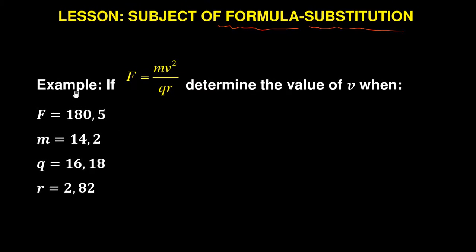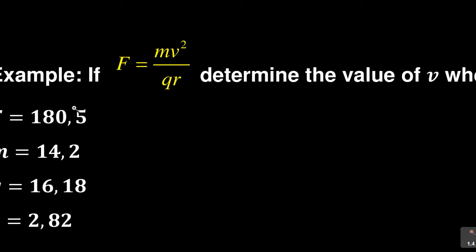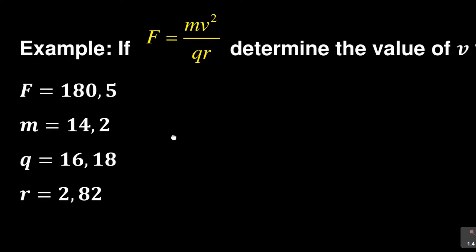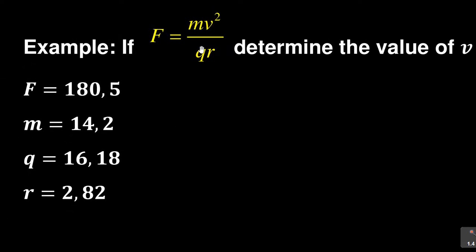Let us look at this question. It says: if F = mv²/qr, determine the value of v. So they want us to find v in this case. I'm going to expand the formula so that I can show you clearly. This is the formula: F = mv²/qr. Now they want me to find v in this case.